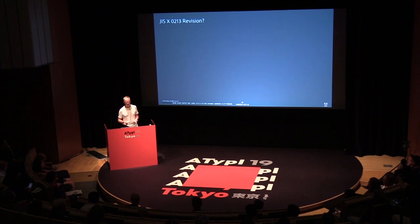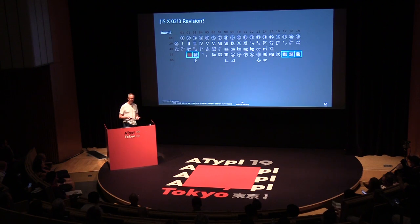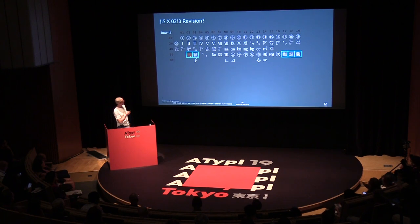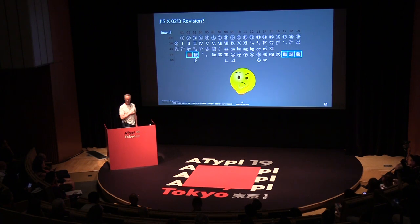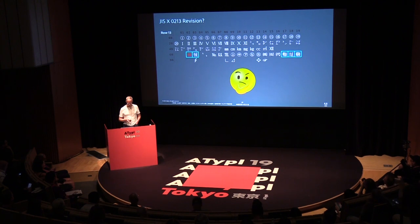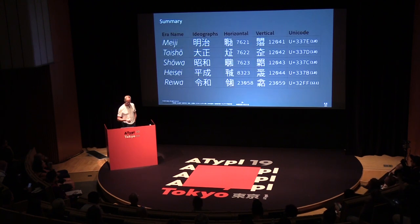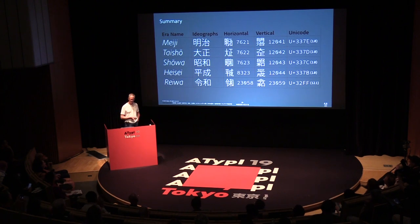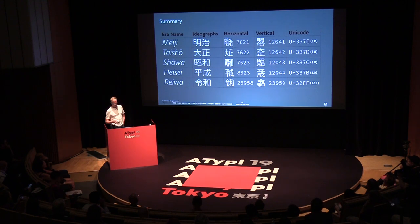Now that we have this new character, and because the four previous era-name ligatures are in JIS X0213, one thing I've been thinking about is whether they'll update the standard to include it. In red, you can see one possible position for that character. We shall see — this is beyond my control, but I'm curious whether that's going to happen.